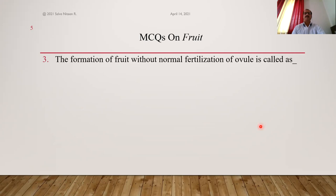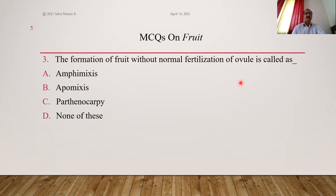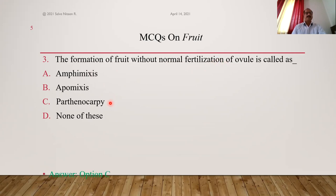The formation of fruit without normal fertilization of ovule is called what? Options: amphimixis, apomixis, parthenocarpy, none. Amphimixis means normal fertilization of male and female gametes. Apomixis is a type of asexual reproduction. The formation of fruit without normal fertilization, which results in seedless fruit, is called parthenocarpy. Answer is option C.